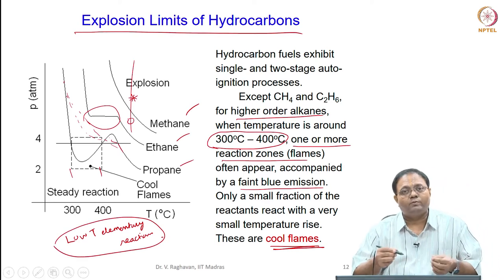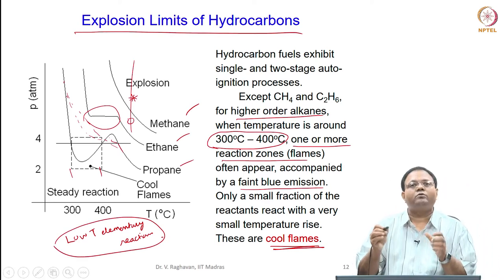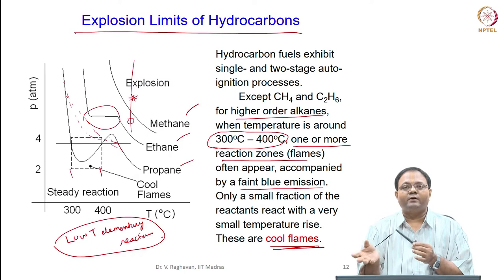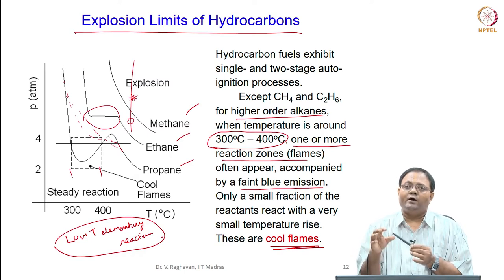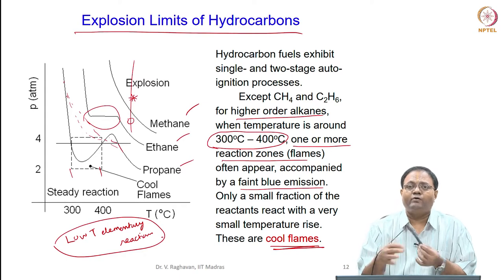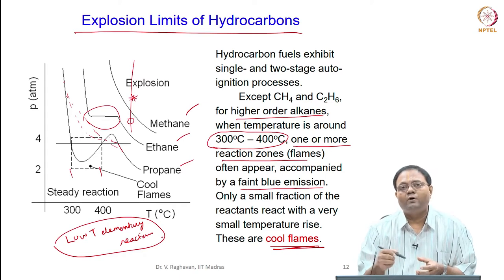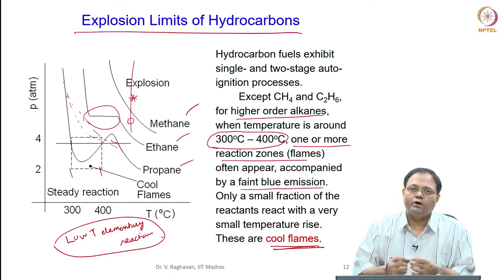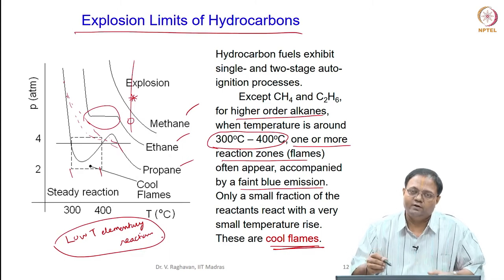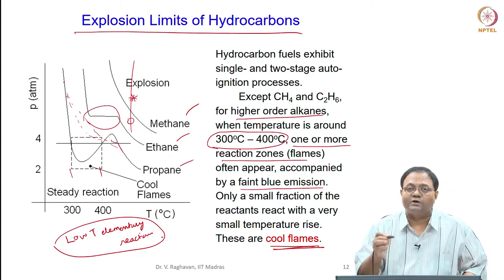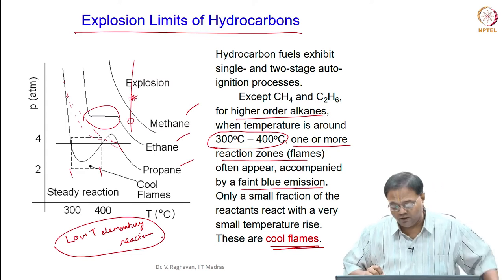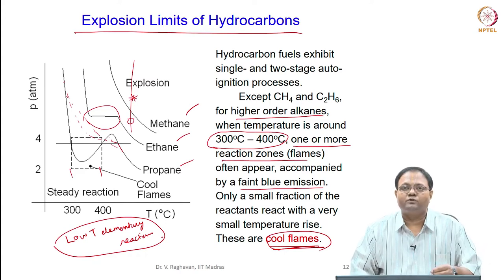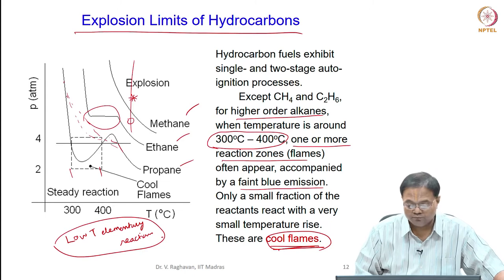To explain why cool flames occur, we have to seek what are called low temperature elementary reactions. Reactions are possible at very low temperatures in the range of 300 to 400 Kelvin - the oxidation is possible. This is actually used in IC engines where, if you can restrict the temperature rise and combust your fuel at a low temperature range, the production of emissions like NOx can be reduced.